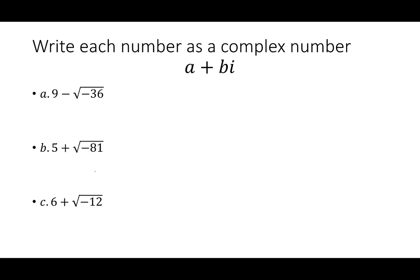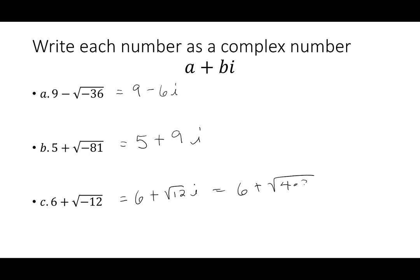Let's write each number as a complex number in the form a plus bi. For 9 minus the square root of negative 36, the square root of 36 is 6, so we write 9 minus 6i. For 5 plus the square root of negative 81, the square root of 81 is 9, giving us 5 plus 9i. For 6 plus the square root of negative 12, the square root of 12 simplifies to 2 square root of 3, giving 6 plus 2 square root of 3i. Keep the real part in front and the imaginary part second.